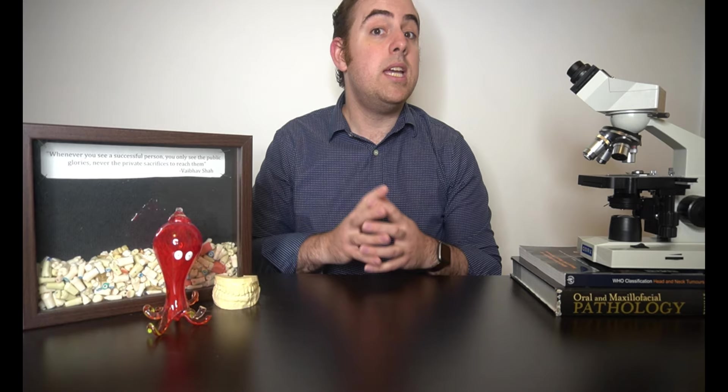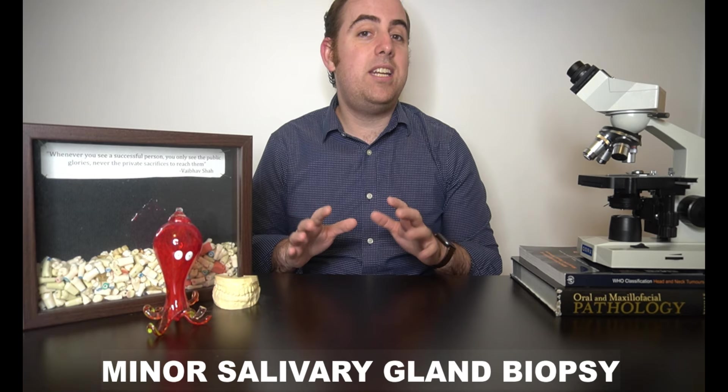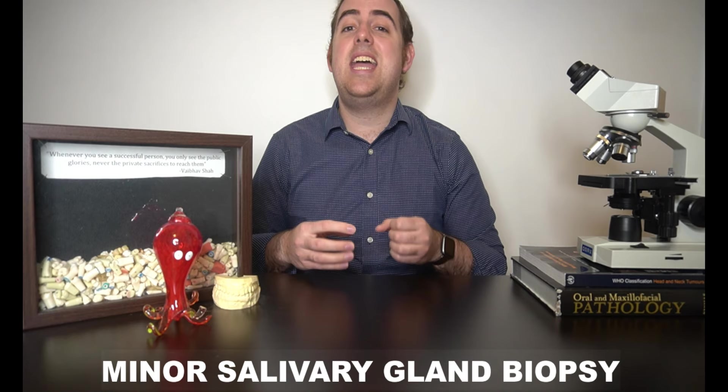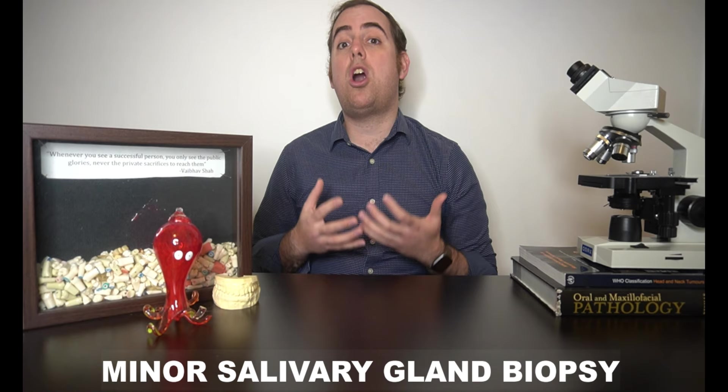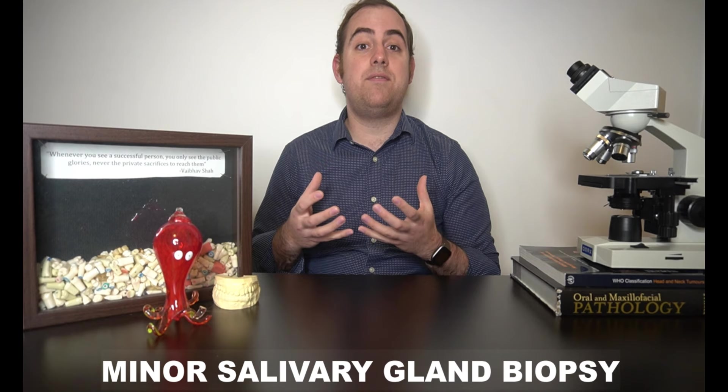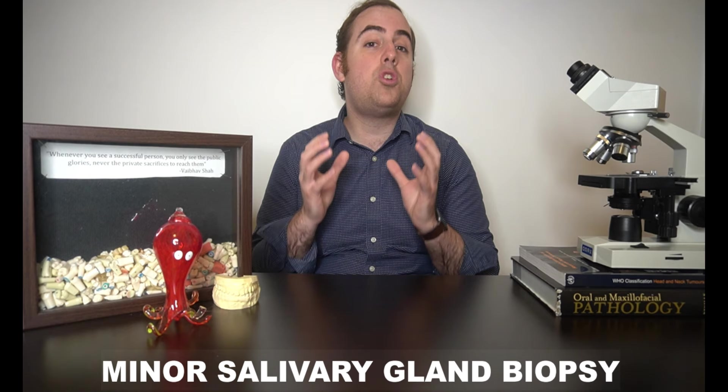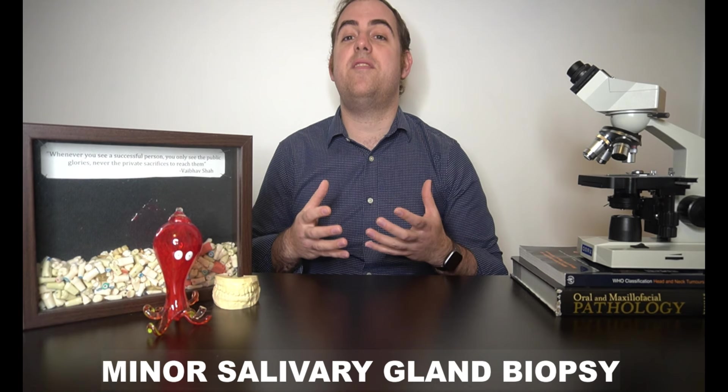The next test is the minor salivary gland biopsy, and that's where I'll be spending most of my time discussing in this video. This is often where I get involved. Many clinicians consider this the gold standard of Sjogren's syndrome diagnosis. And while it can be helpful, it often isn't this magic test with all of the answers. Instead, it is imperative that it is considered as one factor in a multifactorial diagnosis. In these biopsies the minor salivary glands being examined are often taken from the lower lip. The pathologist then looks at a specific type of inflammation around the ducts that release the saliva.